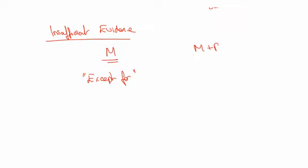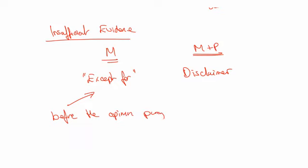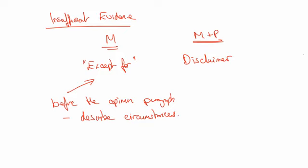But if it's material and pervasive — and those three are big things — then we have to give a disclaimer, which says we are unable to give our opinion. All of this comes before the opinion paragraph. We describe what's happened, we describe why, we describe the circumstances of what has happened. And then the final thing you should do, if you're ever going to modify your report, you should tell somebody.